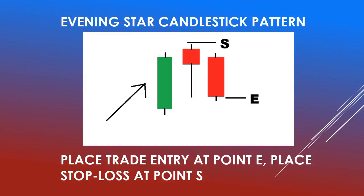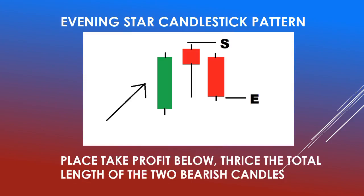To trade the evening star candlestick pattern, you place your trade entry at point E as shown on the screen. You also place your stop loss at point S. For take profit, you measure the total length of the two bearish candles.